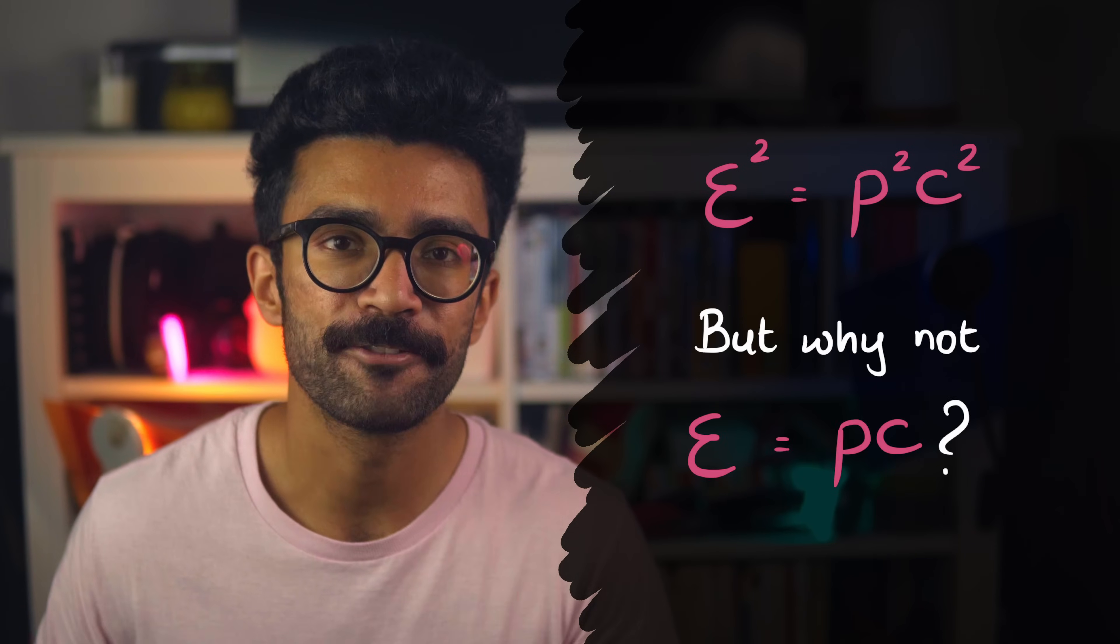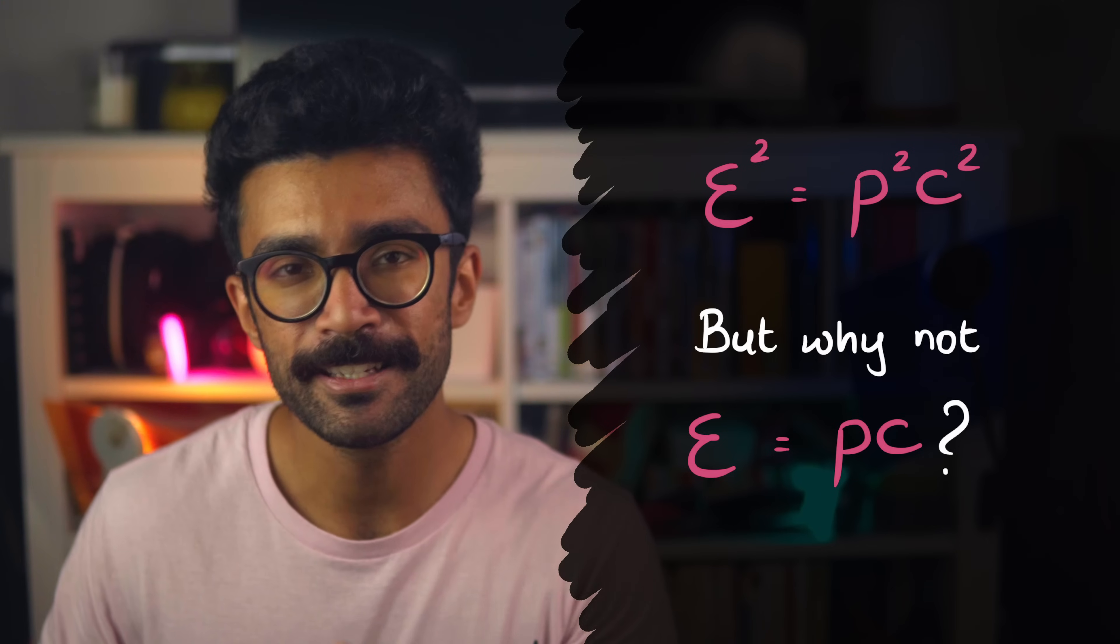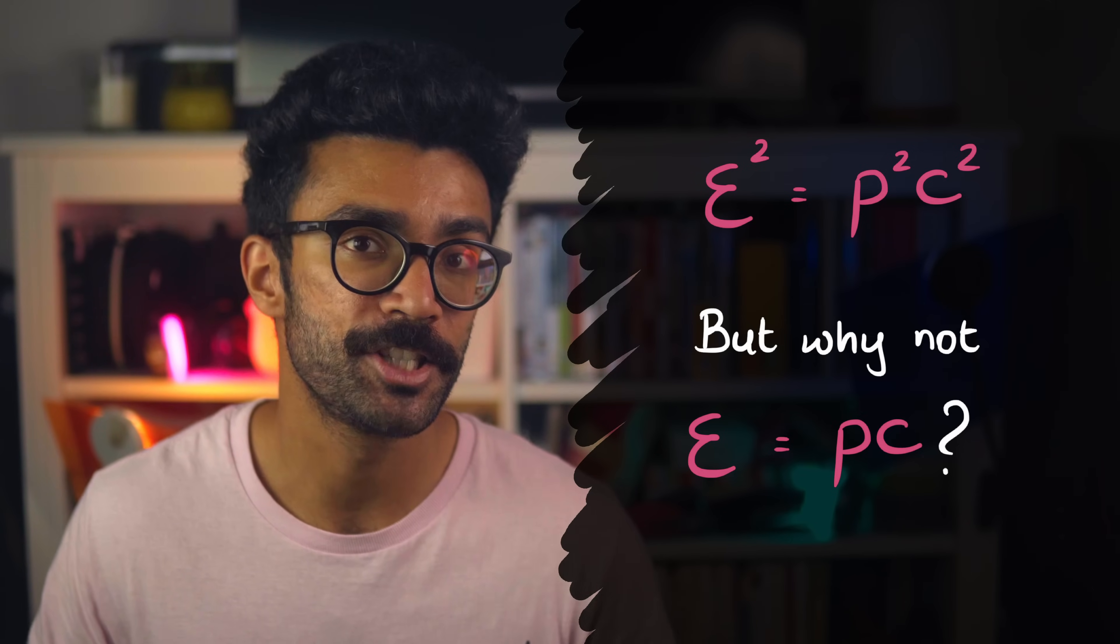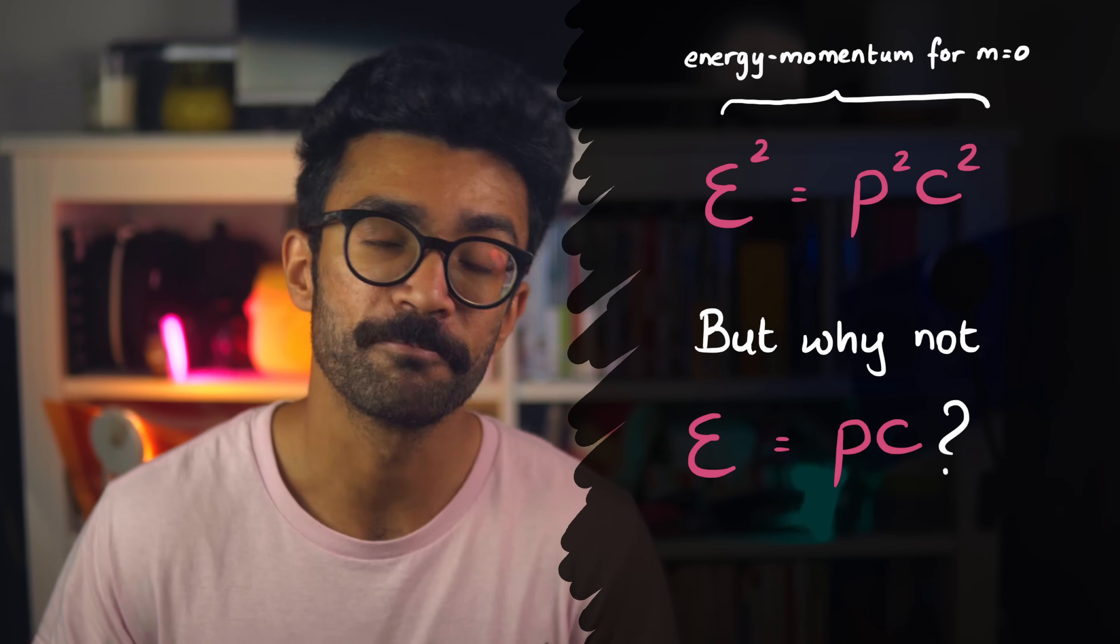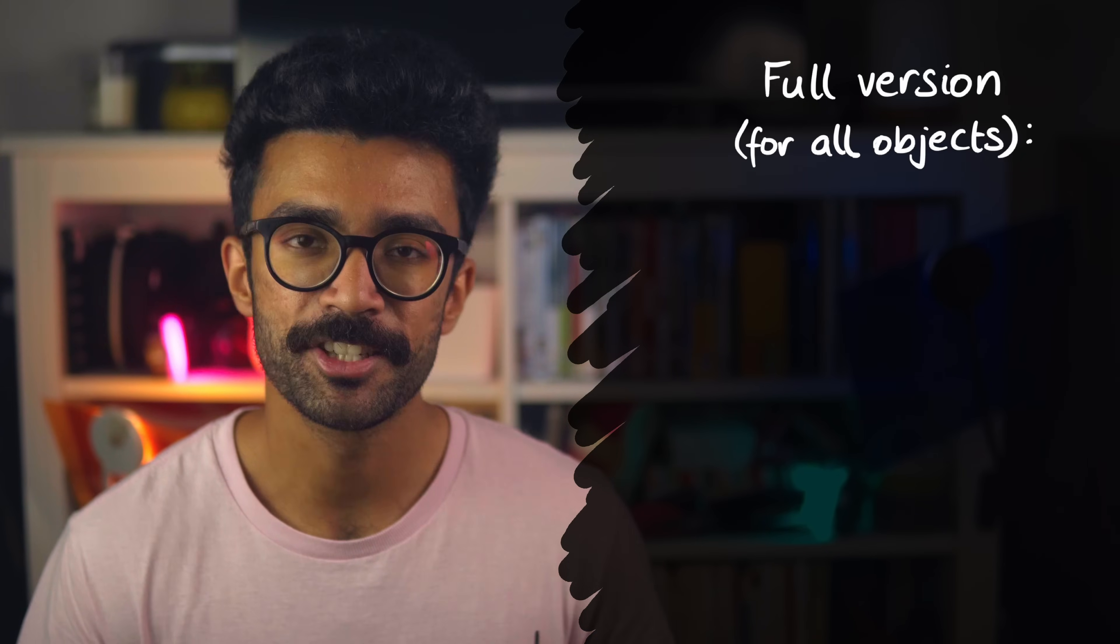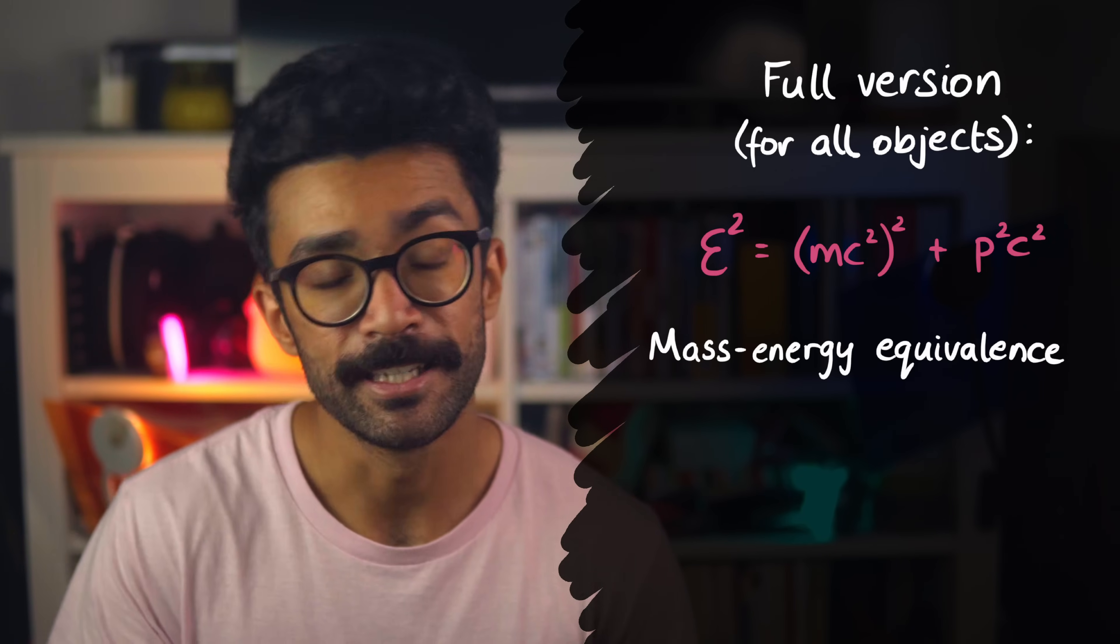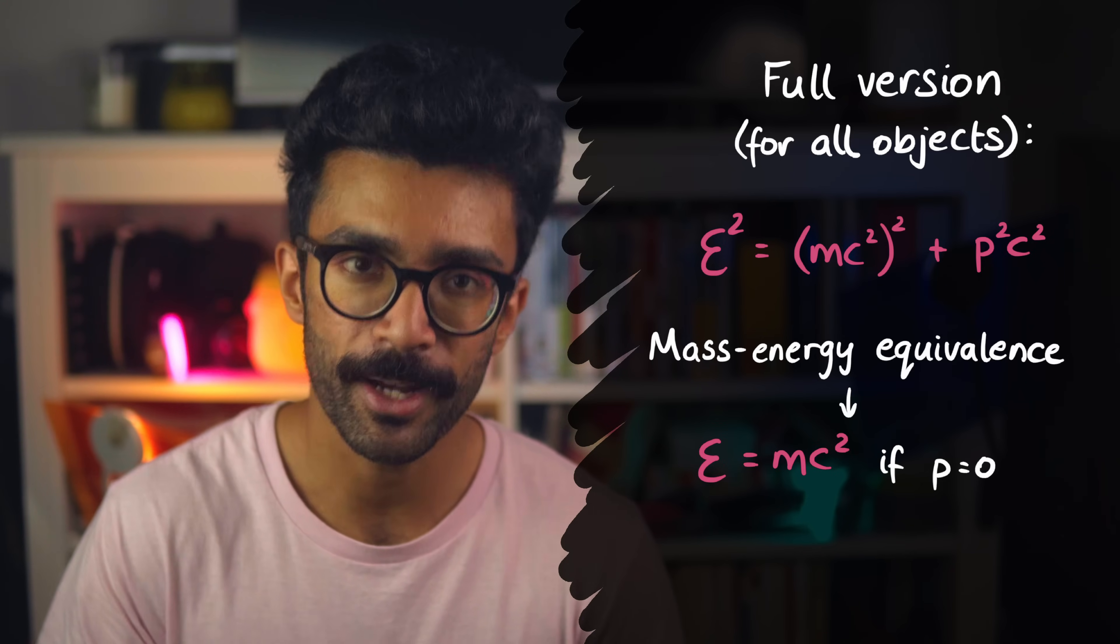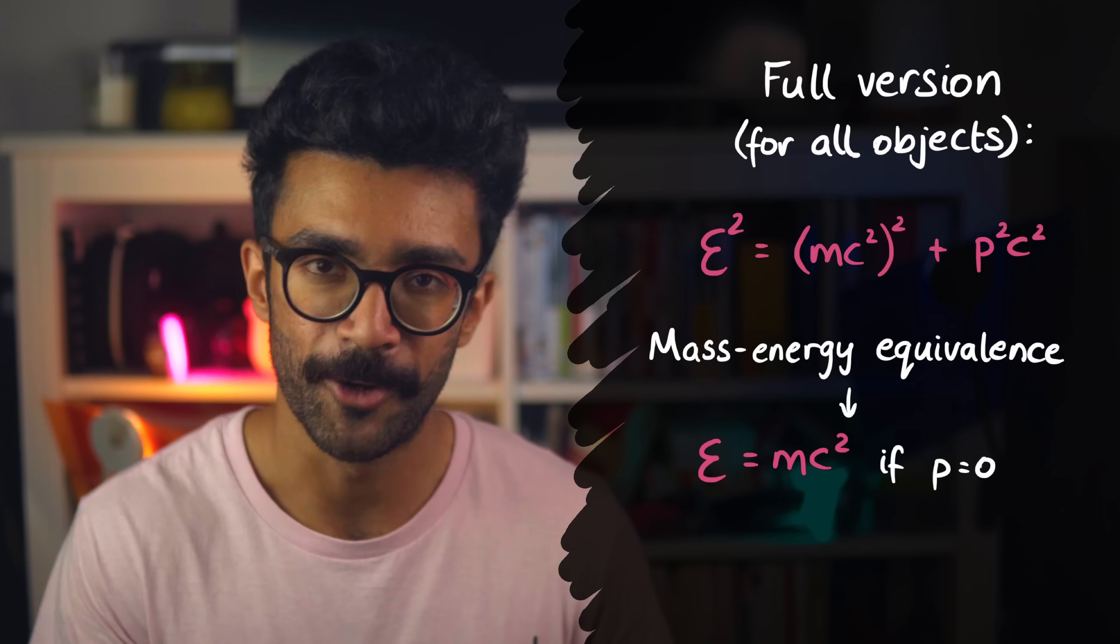Now, there's a reason why I haven't taken the square root of this relationship and simplified it. And the reason is because in this form, we can clearly see that this is the relationship between energy and momentum for any object without mass. Which is exactly what photons are. The full version of this energy-mass relationship looks like this. This is known as the mass-energy equivalence relation. And it's from this equation that we get Einstein's famous E = mc² equation when we're studying objects that do have mass, but no momentum, meaning that they're not moving.